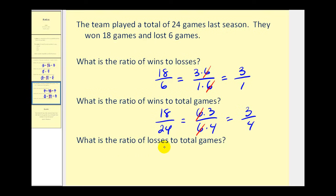And then lastly the ratio of losses to total games. Well there were 6 losses and there were 24 total games, so 6 to 24. Since 24 is equal to 6 times 4, this 6 would simplify out, and the ratio would be 1 to 4.